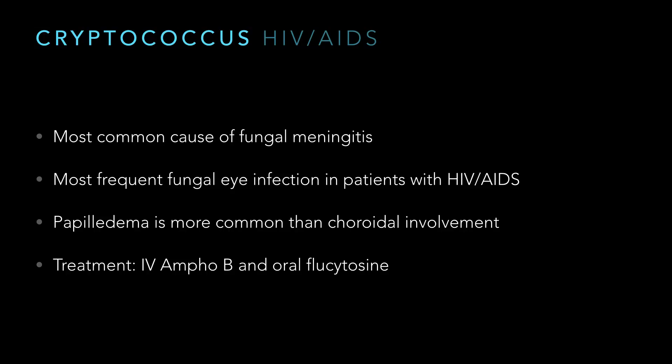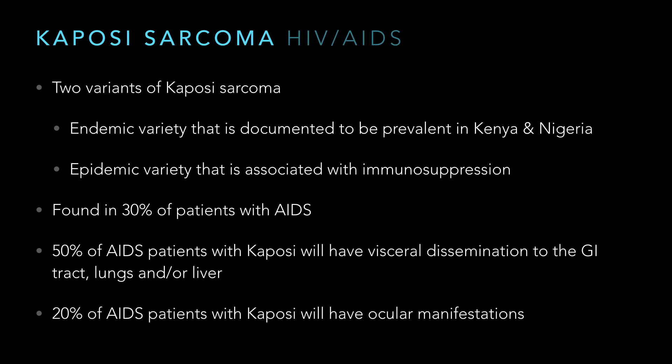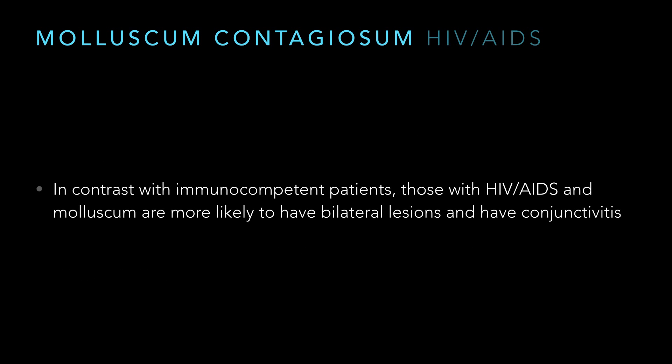Cryptococcus is the most common cause of fungal meningitis in HIV/AIDS and the most frequent fungal eye infection in HIV/AIDS — though the book contradicts itself a bit on this versus candida. Papilledema is more common than choroidal involvement; think about that CNS component. They can get optic nerve atrophy, and you want to treat it promptly. Kaposi sarcoma — there are two varieties: the endemic one classically in Kenya and Nigeria, and the epidemic variety associated with immunosuppression. Thirty percent of AIDS patients have it. It's associated with HHV-8, human herpesvirus 8. Think about visceral dissemination — GI tract, lungs, liver — and treatment options include excision, cryotherapy, or radiation.